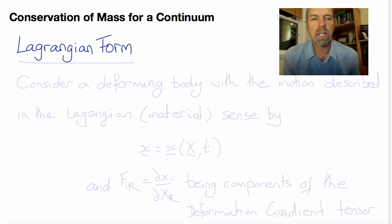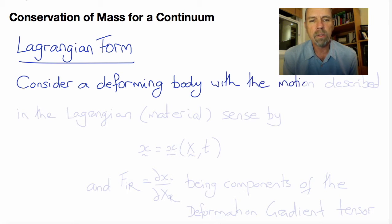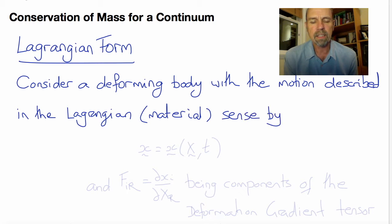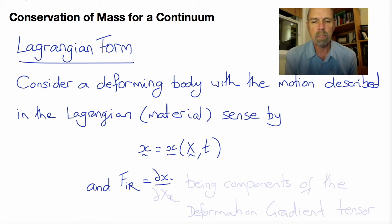First we'll derive the Lagrangian form of mass conservation. To do that we'll consider a deforming body with a motion described using a Lagrangian material representation as x equals x of X and T. From this we can get the components of the deformation gradient tensor, F_iR, being the partial derivatives of little x_i with respect to big X_R.